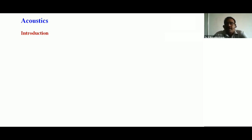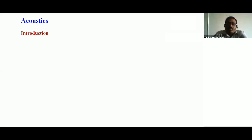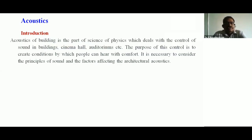Simple definition: to control unnecessary sounds in buildings, classrooms, auditoriums, or cinema halls — that is called acoustics. The perfect definition: the branch of physics which deals with the planning, design, and construction of a hall, auditorium, or a room to provide the best audible sound to every audience — that is called acoustics.